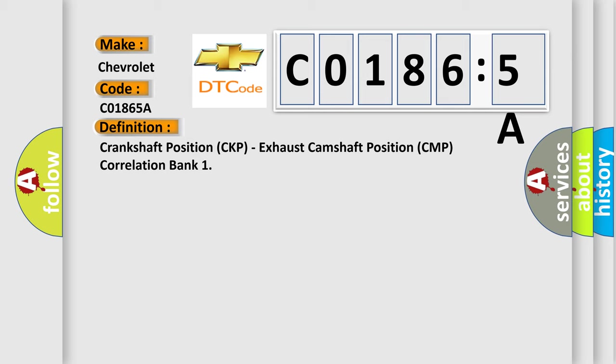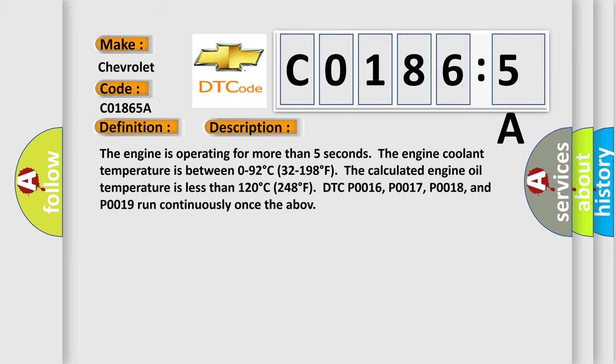And now this is a short description of this DTC code. The engine is operating for more than five seconds. The engine coolant temperature is between 0 to 92 degrees Celsius, 32 to 198 degrees Fahrenheit. The calculated engine oil temperature is less than 120 degrees Celsius, 248 degrees Fahrenheit.